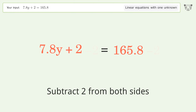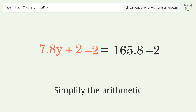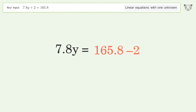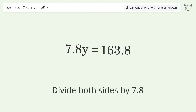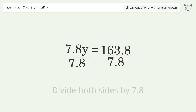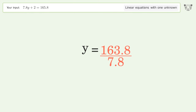Simplify the arithmetic. Isolate the y — divide both sides by 7.8 and simplify the arithmetic. And so the final result is y equals 21.